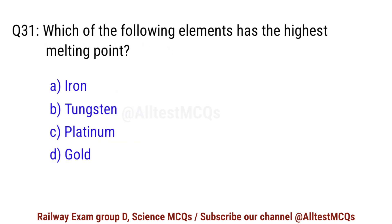Question No. 31. Which of the following elements has the highest melting point? Correct option is B. Tungsten.